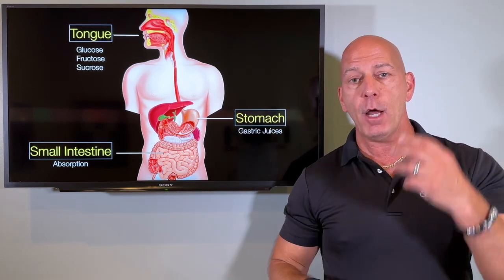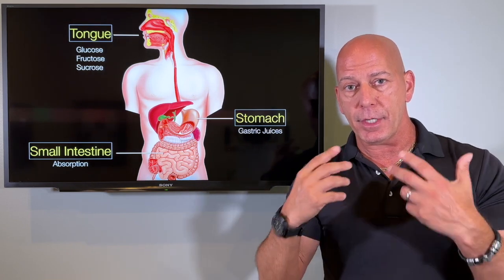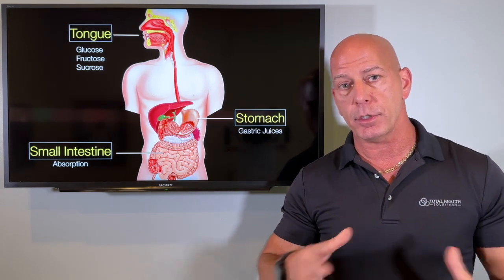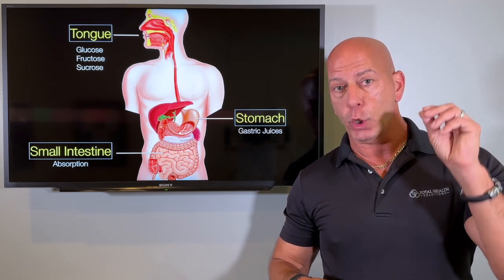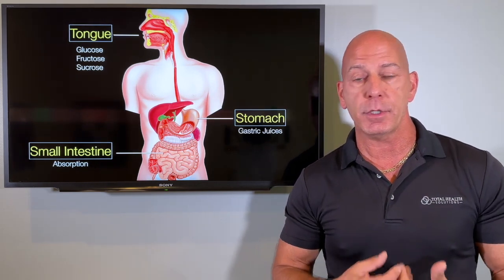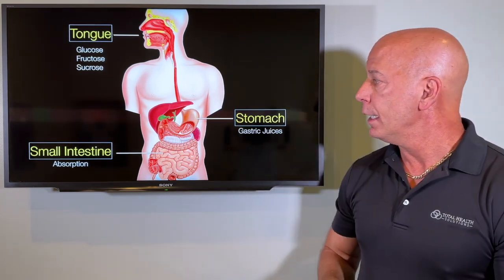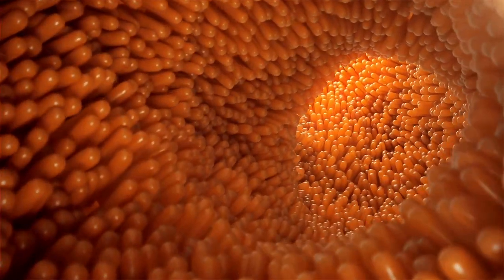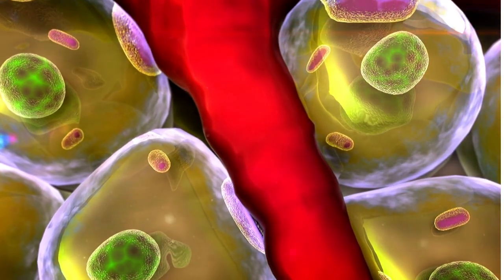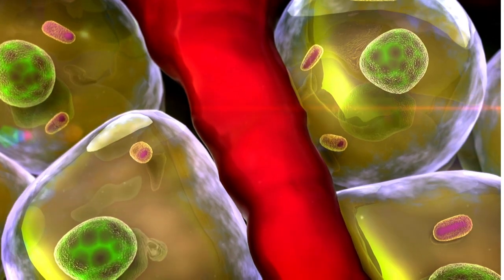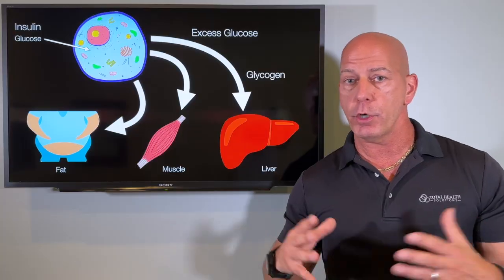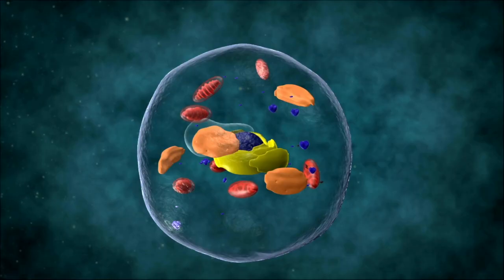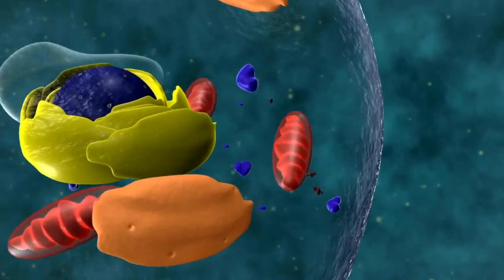When sugar goes into your mouth, it starts to get digested by salivary amylase — enzymes inside your mouth that start the digestive process. Unlike proteins, which wait until you get into your stomach and small intestine, sugar is digested directly in your mouth, which is one of the reasons why it starts to become so addictive, because you get that sweet taste right away. It then goes into the stomach where it's mixed with gastric juices, and then it's taken to the small intestine where it's really absorbed. Insulin now kicks in to shuttle it into the cell to be burned for fuel, and as long as your body is working properly with adequate insulin and low insulin resistance, your body will take the glucose into your cell where it's processed and used for fuel.